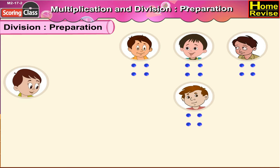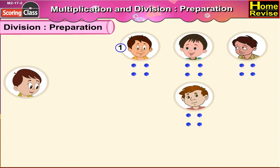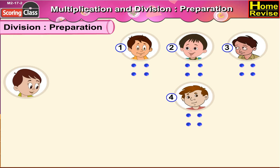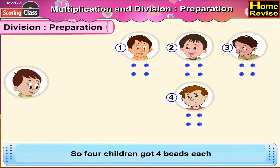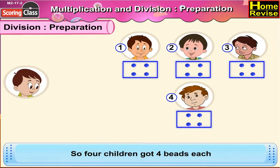Let us see the total number of children. One, two, three, four. So, four children got four beads each.